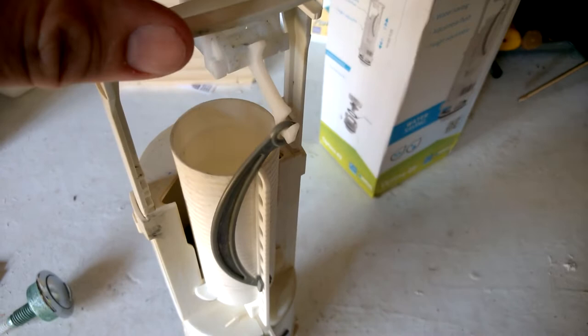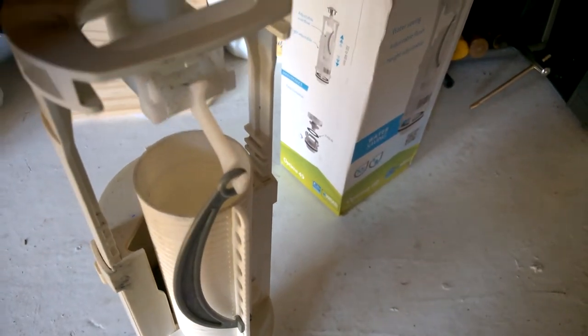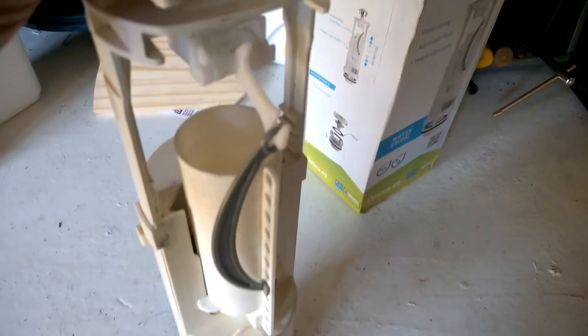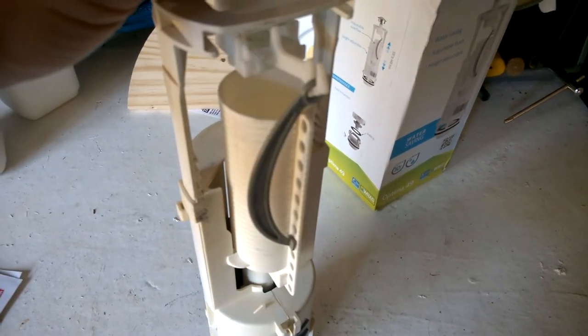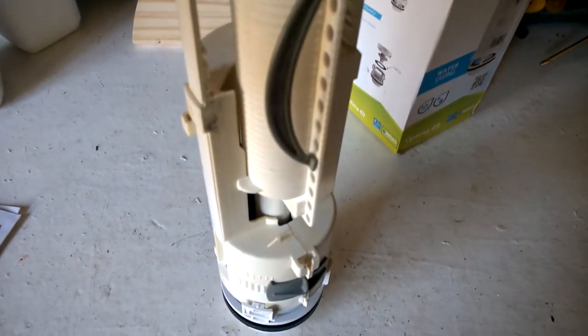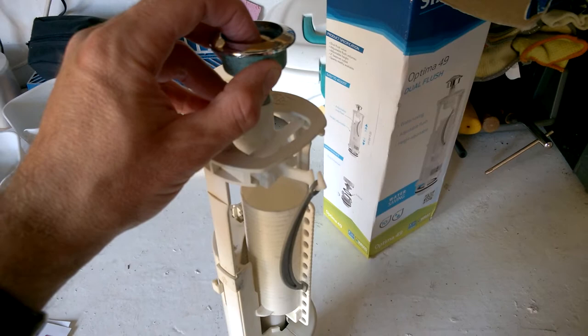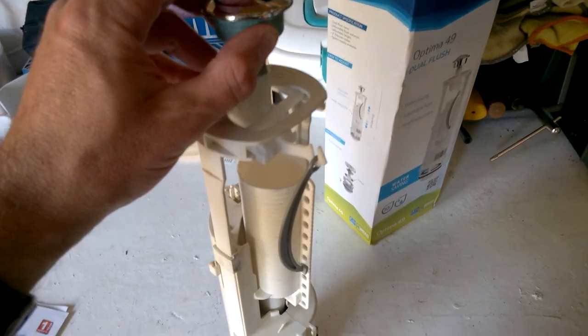This is your flush mechanism. So when you press that down, you can see that's lifting. When that lifts, that allows the water to come out and flush your toilet. In order to flush, you had to hold the button down until it emptied.